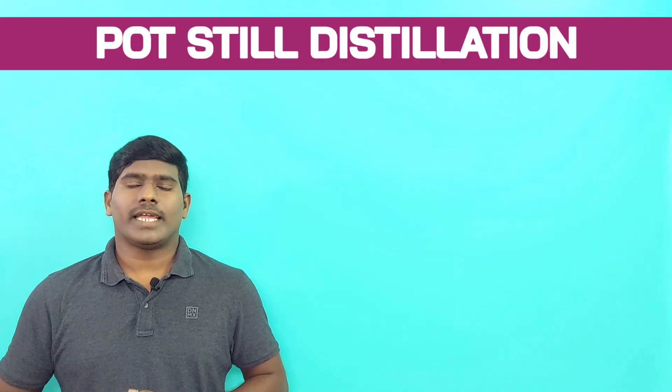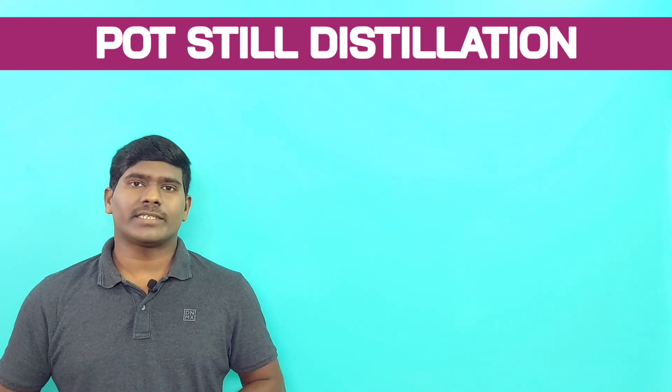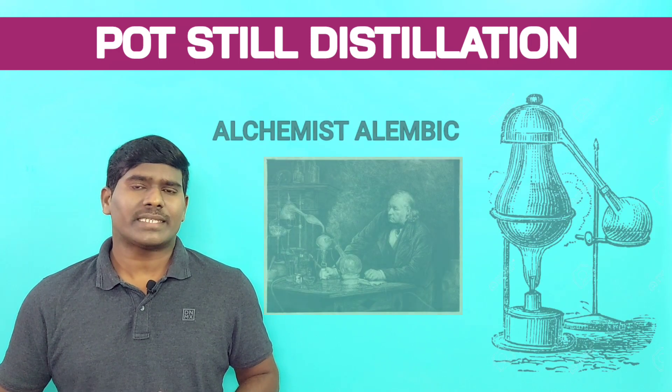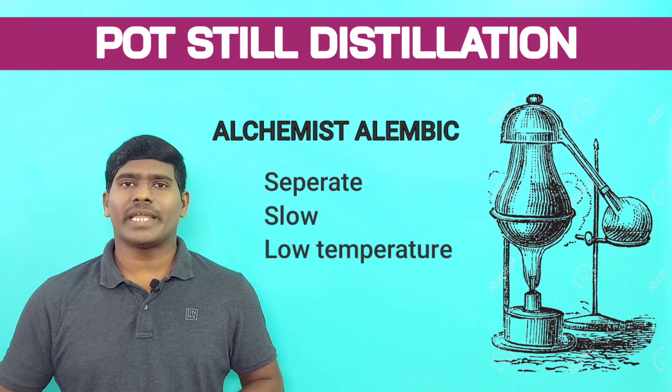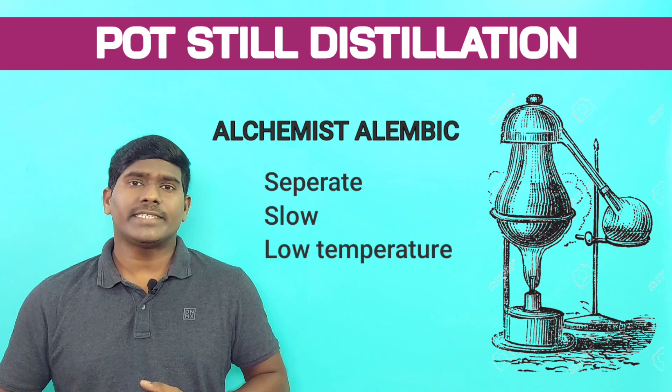Pot still originated in the Middle Ages and is based on the alchemist alembic. It is associated with separate, slow and low temperature distillation. As a result, the end product contains a good proportion of congeners.